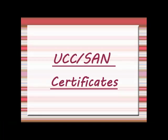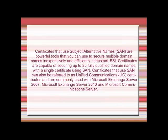UCC or SAN Certificates. Certificates that use subject-alternative names are powerful tools that you can use to secure multiple domain names inexpensively and efficiently. IdeaStack SSL Certificates are capable of securing up to 25 fully qualified domain names with a single certificate using SAN. Certificates that use SAN can also be referred to as Unified Communication Certificates and are commonly used with Microsoft Exchange Server 2007, Microsoft Exchange Server 2010, and Microsoft Communication Server.